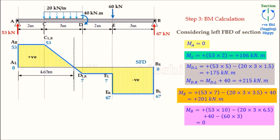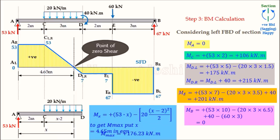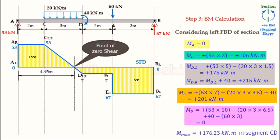At the point of zero shear (x = 4.65 m from A, within segment CD), the bending moment is maximum. Substituting x = 4.65 into the bending moment equation gives M(max) = 176.23 kN·m. When plotting the BMD, this peak value must appear between C and D.